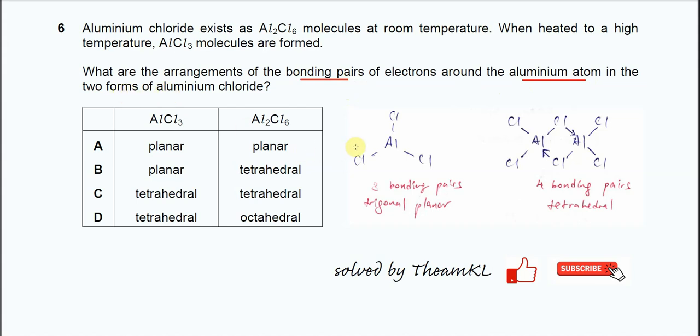Let's look at the AlCl3. For the AlCl3, we know that there are three bonding pairs around the aluminum and therefore, it's going to be trigonal planar geometry for this AlCl3. Therefore, we know that it's just either A or B.